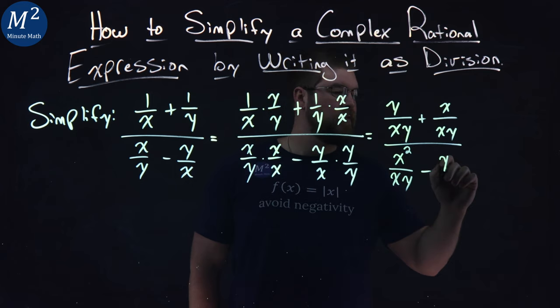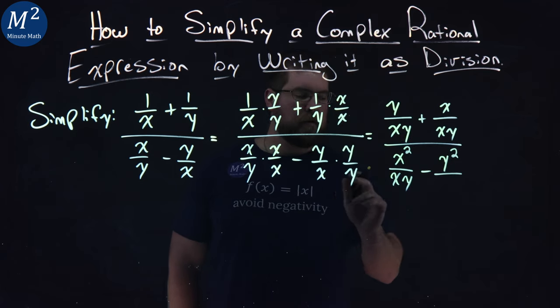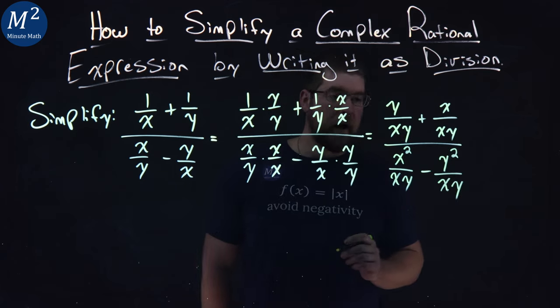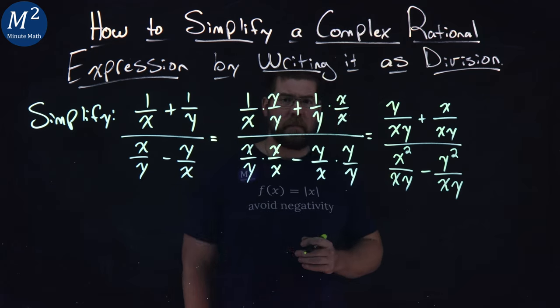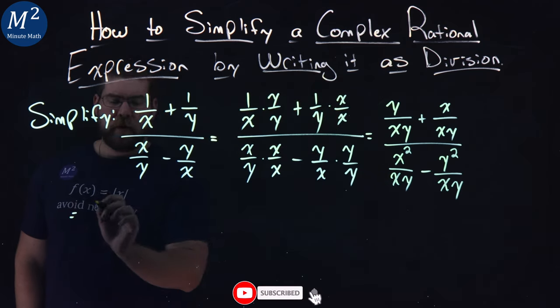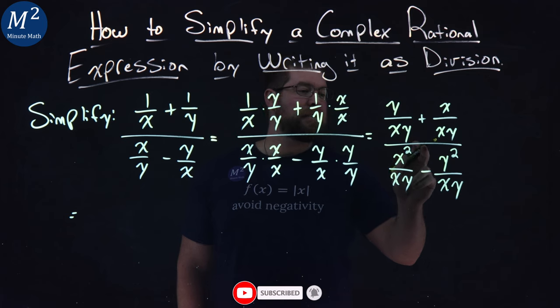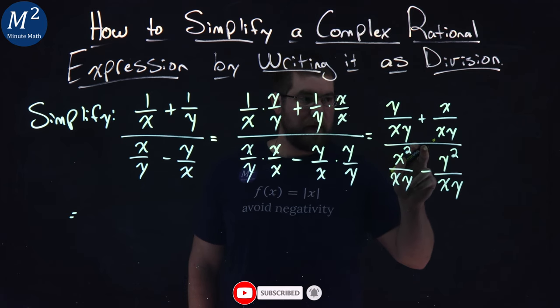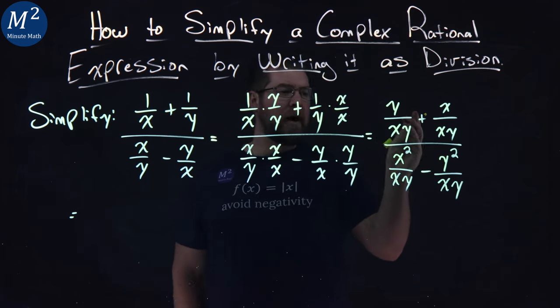Minus here, y times y is a y squared. And x times y is an xy. Hopefully, you stayed with me so far. From here, what I'm going to do is rewrite this as a division problem now. Division problem, I'm going to combine when I can.